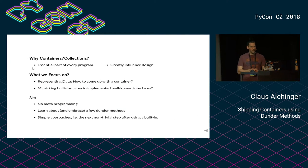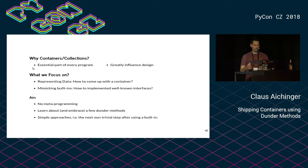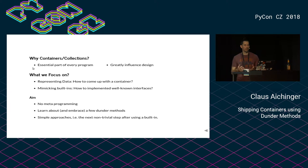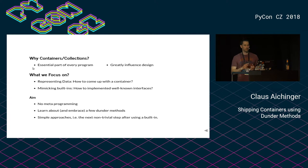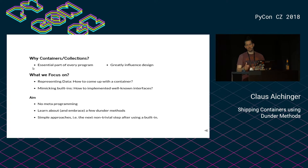We're talking about Dunder methods related to container types or collections, because choosing the right container to store your data is a very essential part of every program and it greatly influences the design. Since this is quite a large topic, we will focus on basically two aspects: first, how we can represent data, and second, if I have some kind of container and I would like to make it behave like a built-in one, how can I achieve this?